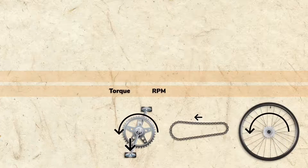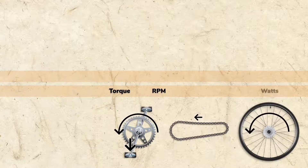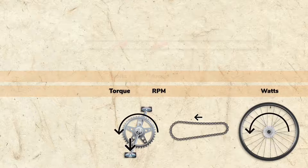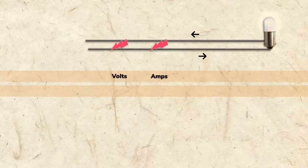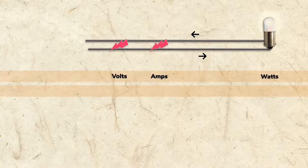The combined power of torque and RPM to turn a wheel is measured in watts. The combined power of volts and amps to electrify a device, like a bulb, is also measured in watts.